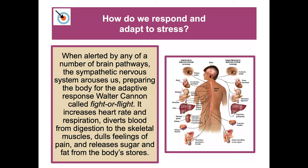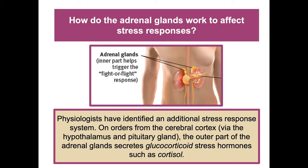How do we respond and adapt to stress? When alerted by brain pathways, the sympathetic nervous system arouses us, preparing the body for the adaptive fight-or-flight response. It increases heart rate and respiration, diverts blood from digestion to skeletal muscle, dulls feelings of pain, and releases sugars and fat. Physiologists have also identified an additional stress response system: via the hypothalamus and pituitary gland, the outer adrenal gland secretes glucocorticoid stress hormones such as cortisol.